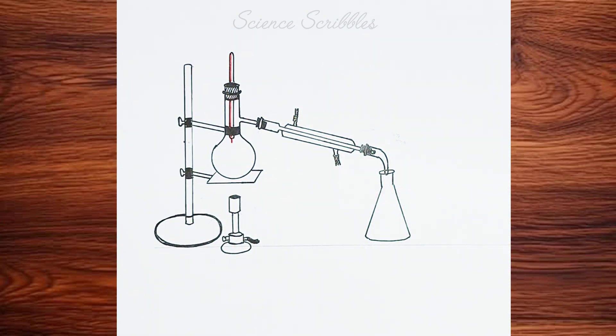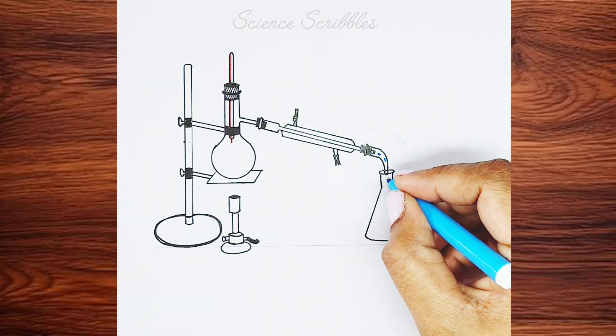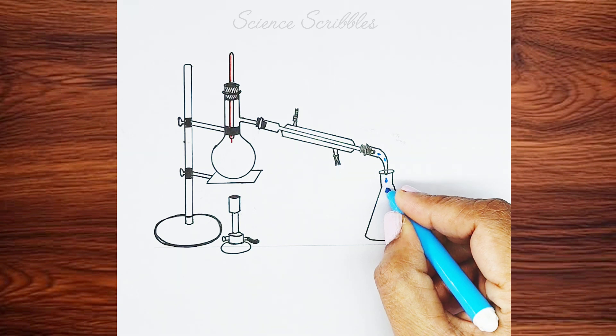I am using a blue sketch pen to show the water droplets and how they collect inside the conical flask. This represents the distilled water.